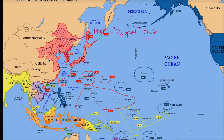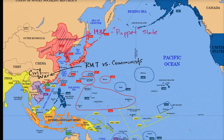We need to remember what is happening in China in the 1930s. China is embroiled in a civil war between the nationalists — the Kuomintang, led by General Chiang Kai-shek — versus the communists, led by Mao Zedong. So you can imagine Imperial Japan is taking advantage of this to take more and more control over parts of China.